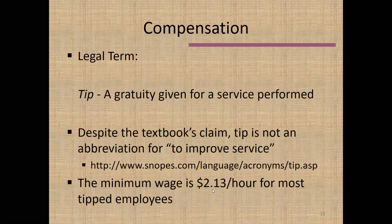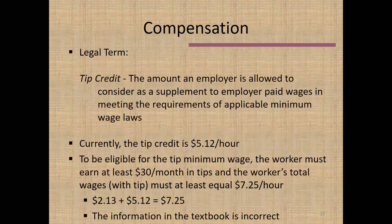The minimum wage for tipped employees is $2.13 an hour because tip income supplements it. The difference between the minimum wage ($7.25) and the tipped minimum wage ($2.13) is $5.12 an hour — this is what we call the tip credit. It is the amount an employer is allowed to consider as a supplement to employer-paid wages to meet the minimum wage level. This amount will change when the minimum wage goes up, so it is not a static number.